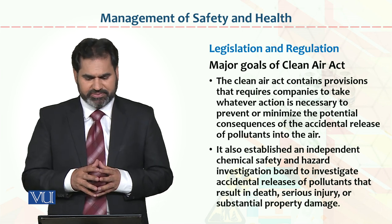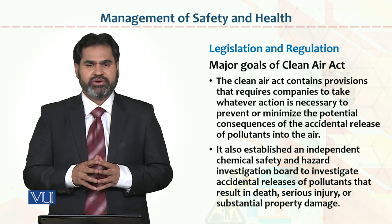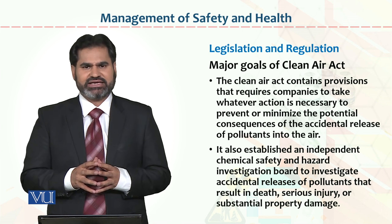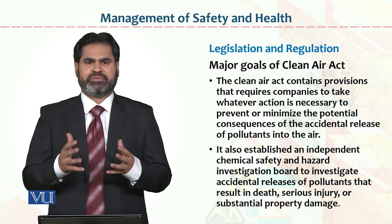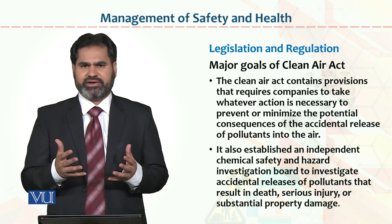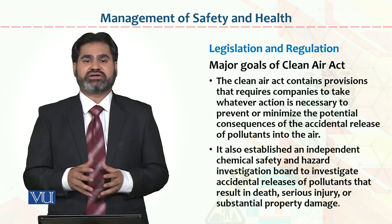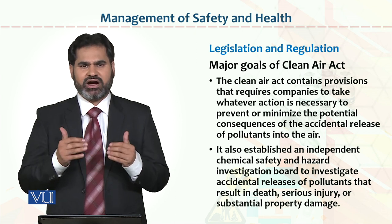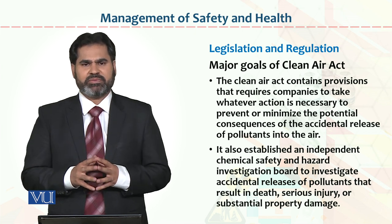It also established an independent Chemical Safety and Hazard Investigation Board to investigate accidental release of pollutants. Pollutants are basically what organizations discharge into the air that become pollution. For example, if you have a lot of smoke in the air discharge, there is smoke — if a car's visibility is reduced, then there is a chance of accident. Also, if the employee's job involves smoke, the heart and lungs can be affected. Organizations can avoid these things if they adopt proper rules and regulations.